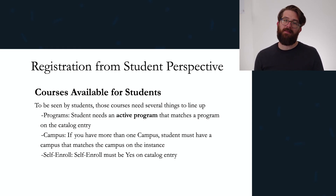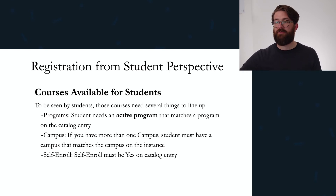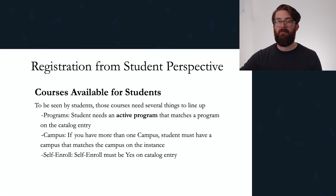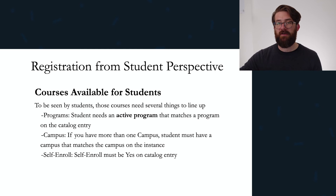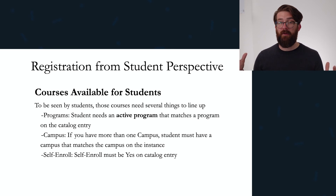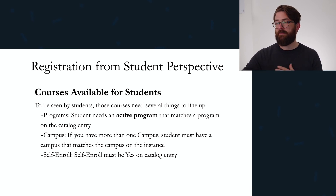Let's talk about what determines which courses show up on the registration tab. One of the big factors is program. Students need an active program on their profile that matches a program set on the catalog entry. For example, we created ENG 125 with the undergraduate program set on the course catalog — we could have multiple programs set there. In order for a student to see a course here, they need to have that same program active on their profile. Because Sonia has that active, she's able to see all the courses with a matching program. This is a way of controlling what a student actually sees.